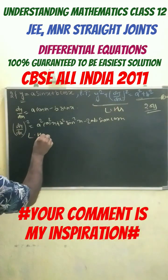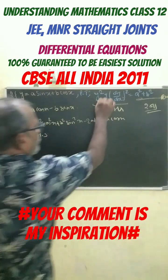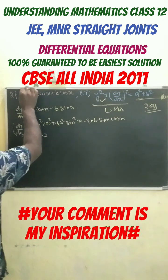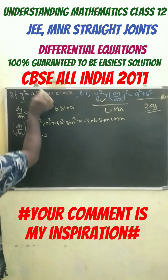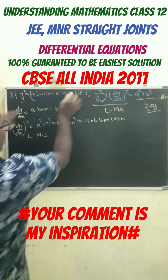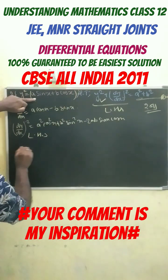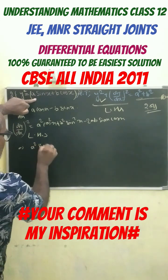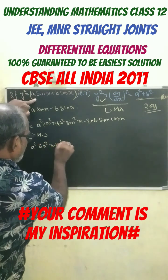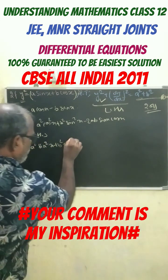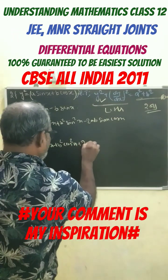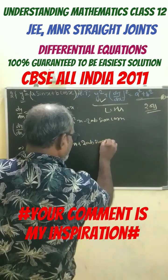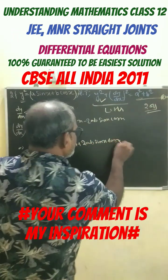Let us assume this is LHS and this is RHS. So, we prove LHS. We know y squared — squaring y gives us a squared sin squared x plus b squared cos squared x plus 2ab sin x cos x.